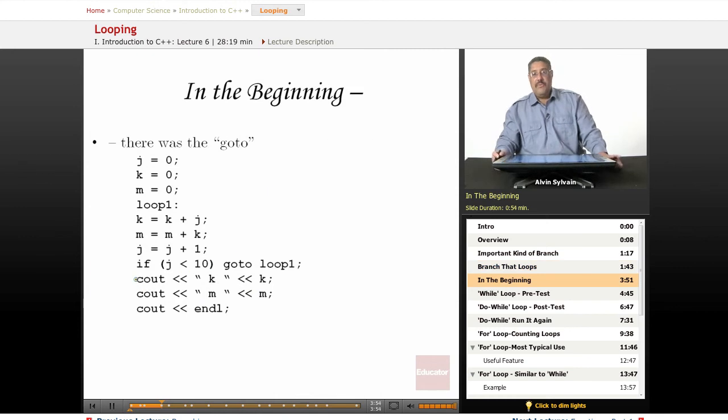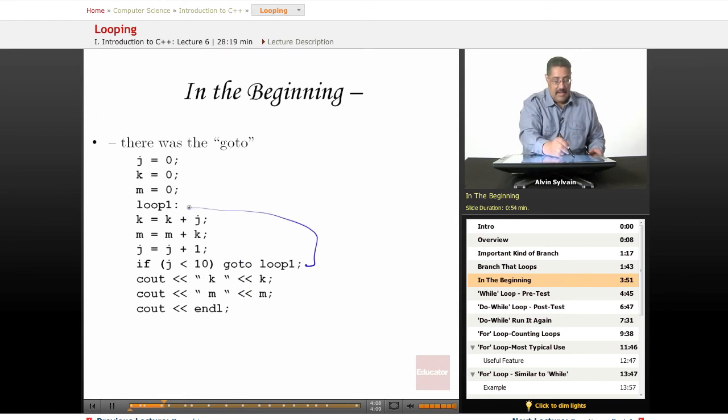Now in early computing, all we had was the goto statement. So we had that same code we just saw. So if j was less than 10, or not the same exact but something similar, we would go back to here. And at the end of it, we would output everything. And the reason why goto fell into disfavor is people would sprinkle code with gotos all over the place.